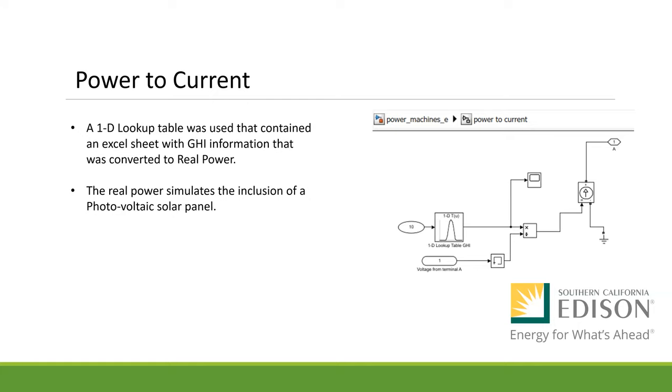Narrowing down from the system, our first subsystem is the power to current block. A 1D lookup table was used that contained an excel sheet with GHI information that was converted to real power. The real power simulates the inclusion of a photovoltaic solar panel. Unfortunately, there was not a dynamic power block, so we needed to convert real power to current and then inject it into the model.